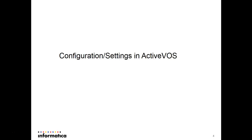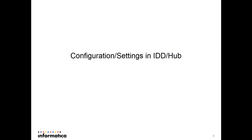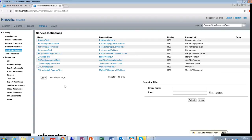There are multiple configuration settings which need to be checked in ActiveVos, which we will cover in our demo on what to look for in the ActiveVos console. There are also a few settings which need to be checked in IDD and Hub, which we will also cover in our demo. Both of these configuration settings need to be in place for the integration between ActiveVos and IDD to work properly and for tasks to be visible.